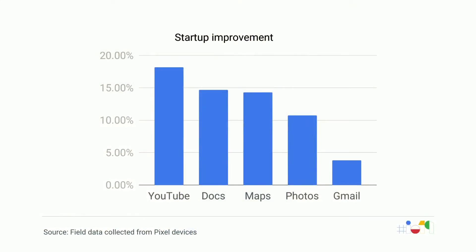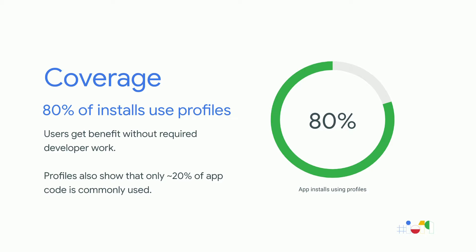Android P also has API support that non-Play devices can leverage. YouTube has a large startup improvement of around 18% from Profiles in the Cloud, and other applications also show substantial improvement — this is field data from Google applications collected from Pixel devices. One of the best parts is that developers and users get the benefits for free. Currently, around 80% of installations on devices with Google Play Services use Profiles in the Cloud. Interestingly, profiles show that only around 20% of application code is commonly used, suggesting opportunities to reduce code size by removing unused code.